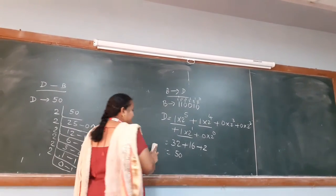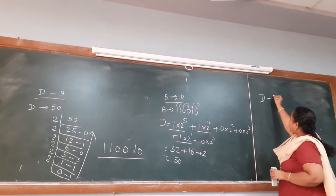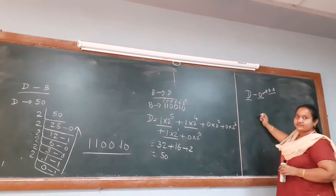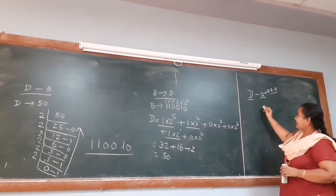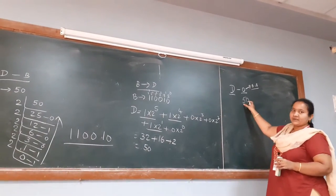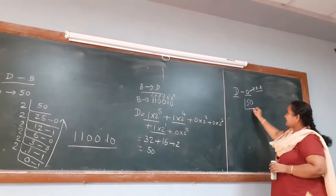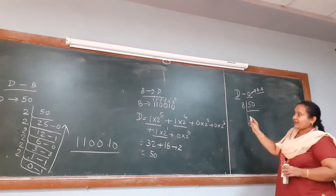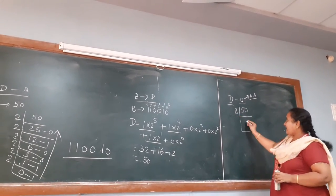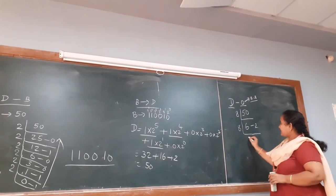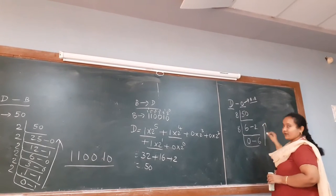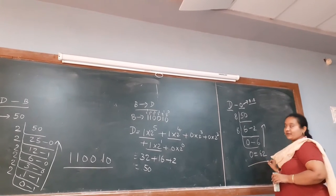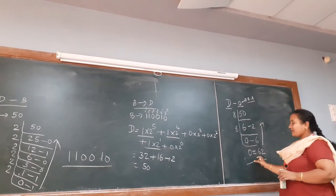Next I am converting decimal to octal. The base of octal is 8. Again I am taking the decimal value 50. We divide this decimal number by the base of octal, which is 8. 8 times 6 is 48, remainder 2. Next, 6 divided by 8 gives 0, remainder 6. Reading from bottom to top, the octal number is 62. So decimal 50 equals 62 in octal.